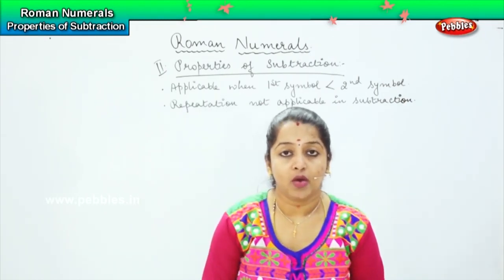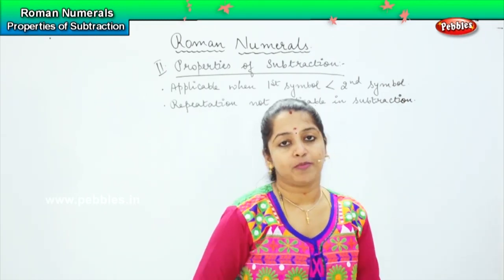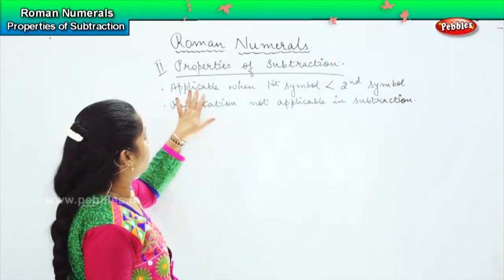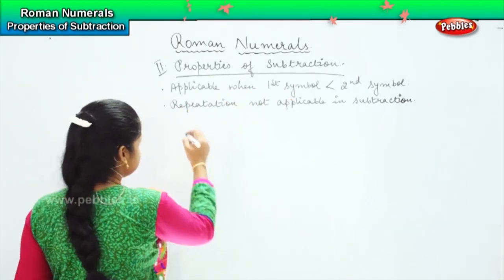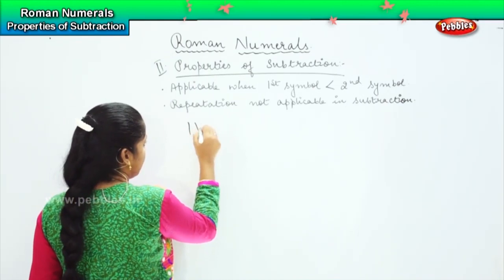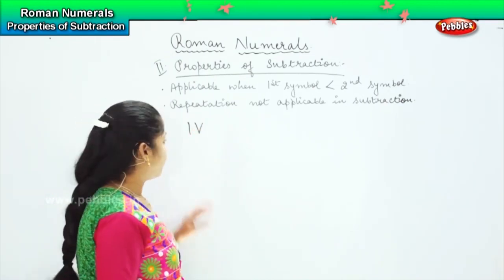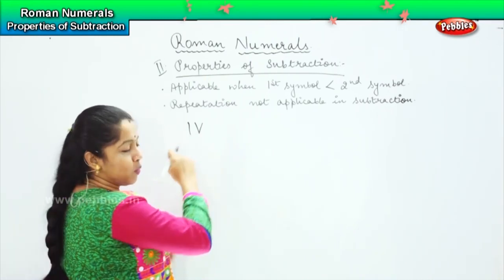Now this is something opposite that we have learnt in addition. When the first symbol is less than the second symbol, for example if I write I and V, we know that I comes first and...